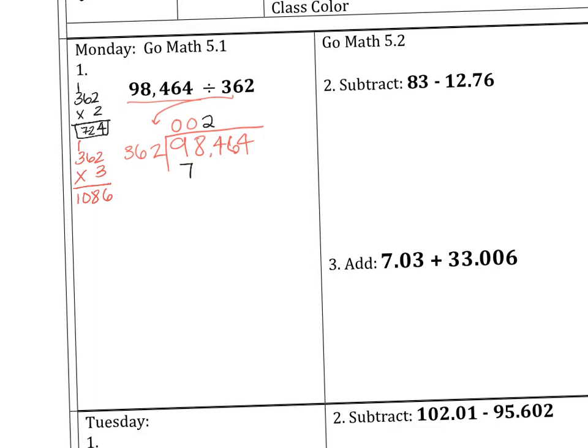And make sure you have your stuff in order. Make sure that you line up your numbers in a nice way, like right here. 9 and 7, 8 and 2, 4 and 4, 6. Because if you start getting messy, this is not going to work. You're not going to get the right answer. Okay, so 362 goes into 984 twice, which is 724.